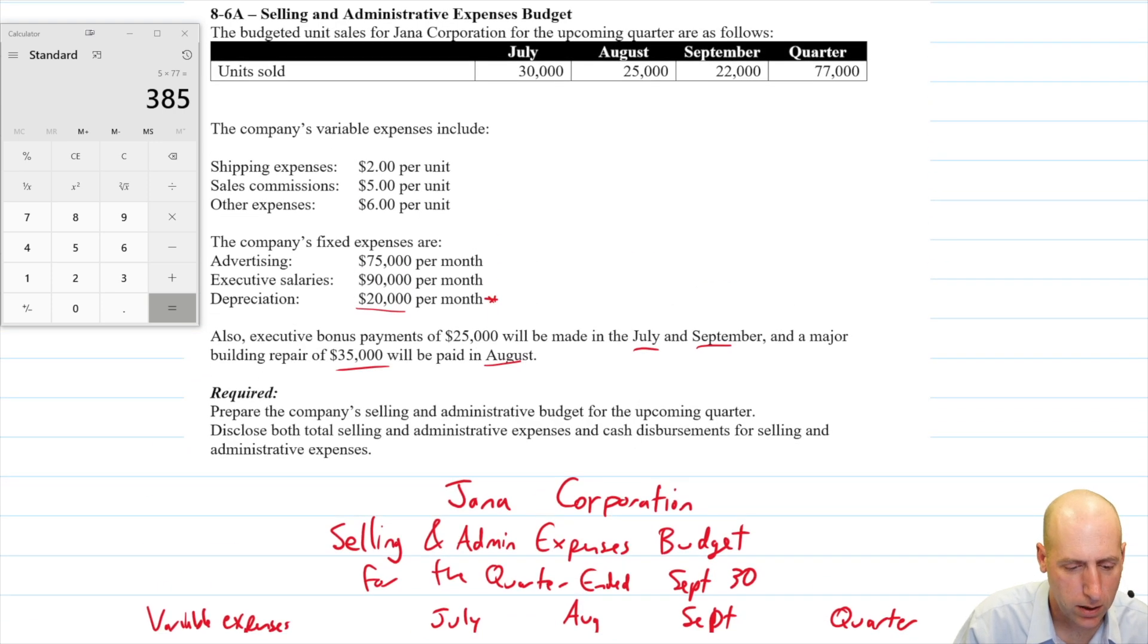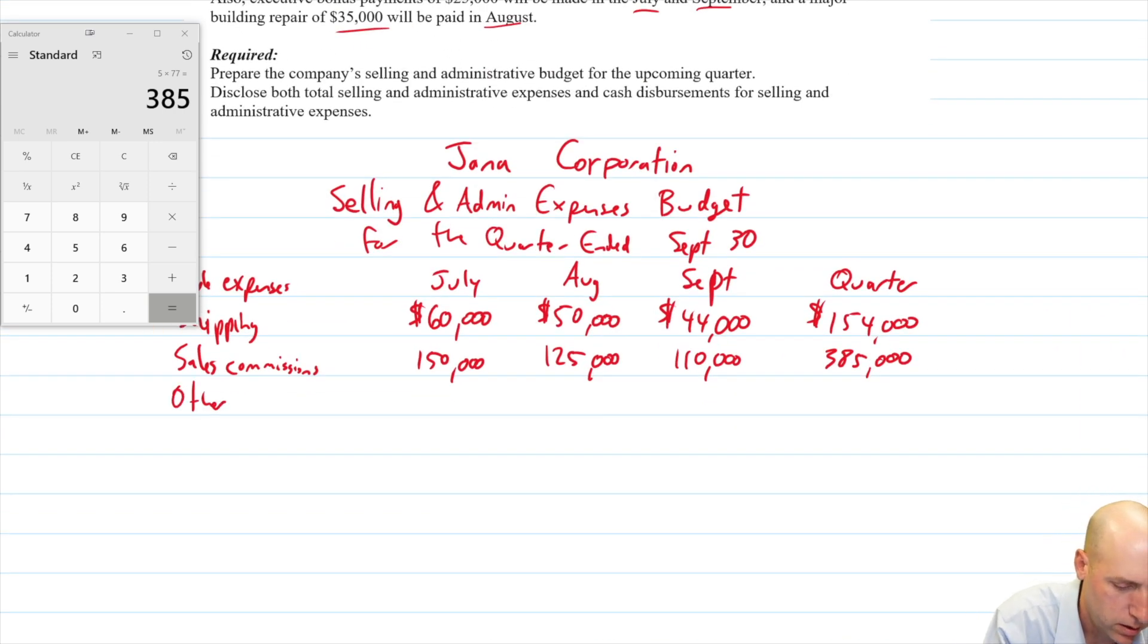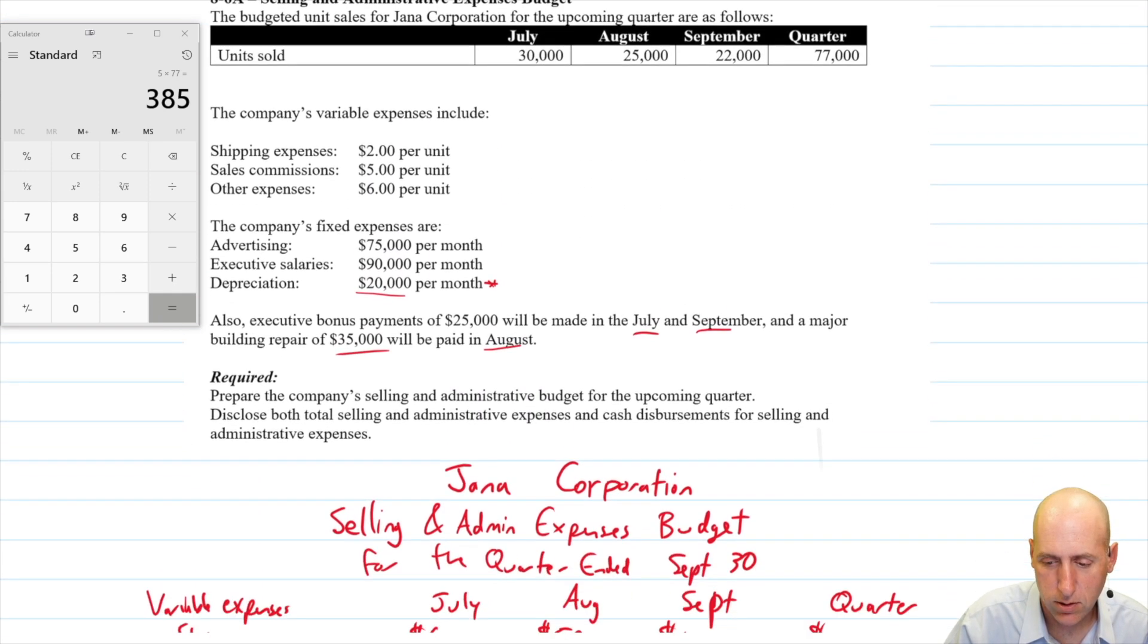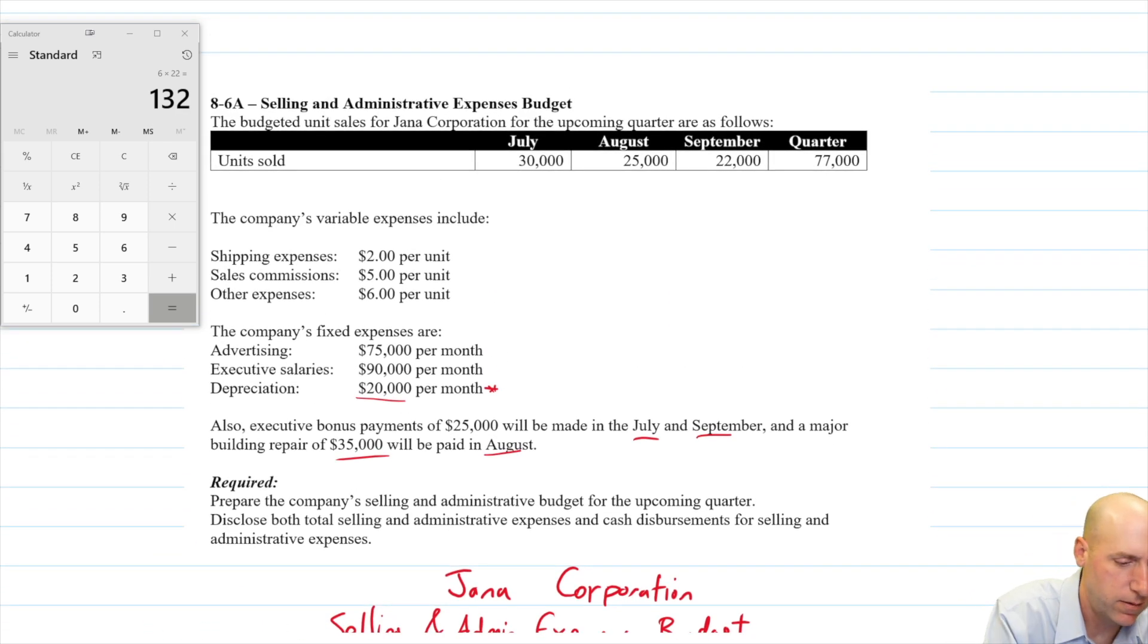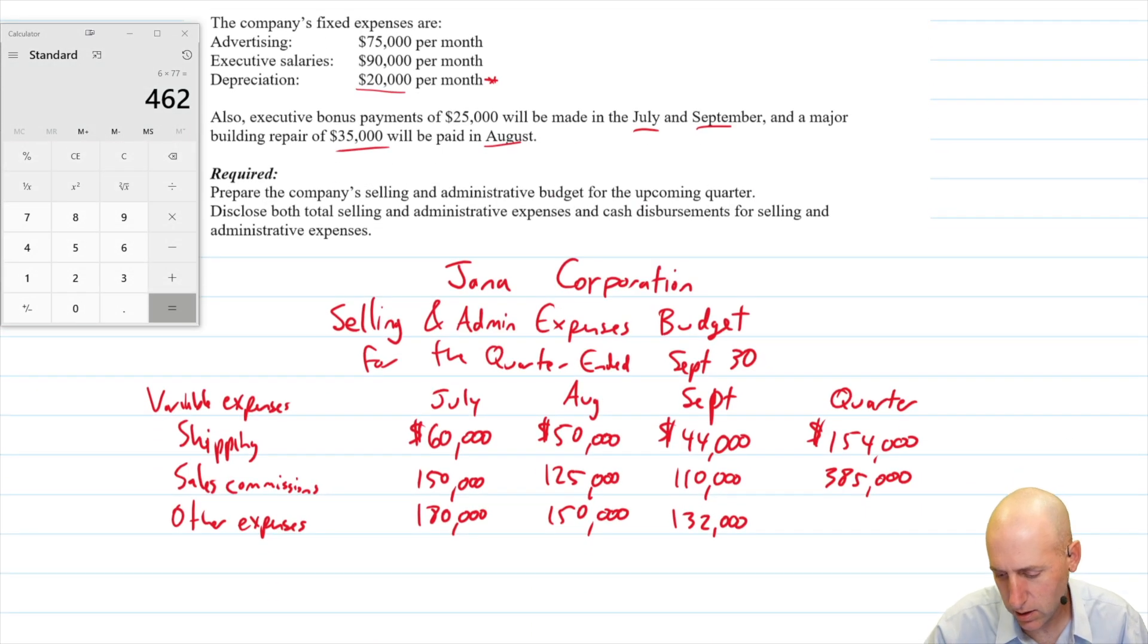Last one on our list, other. And of course, 6 times 30 for July, so it's 180 in July. 6 times 25, so it's 150 in August. And 6 times 22, 132? 132 in September. And in total, 6 times 77, 462.